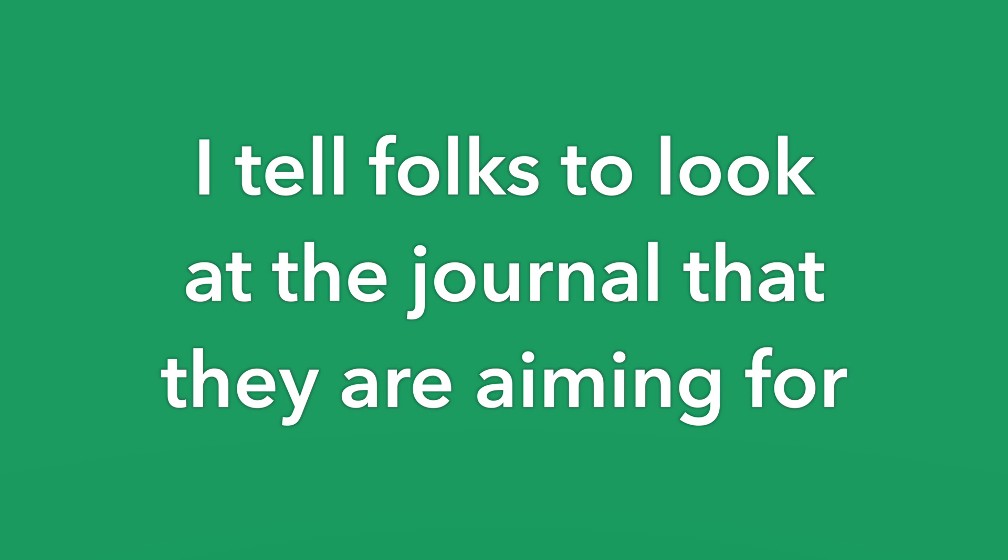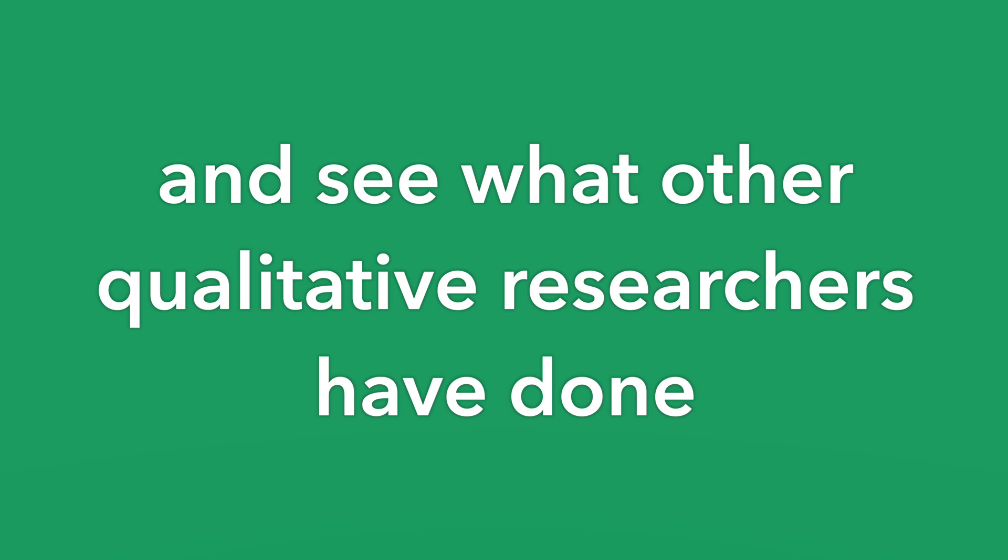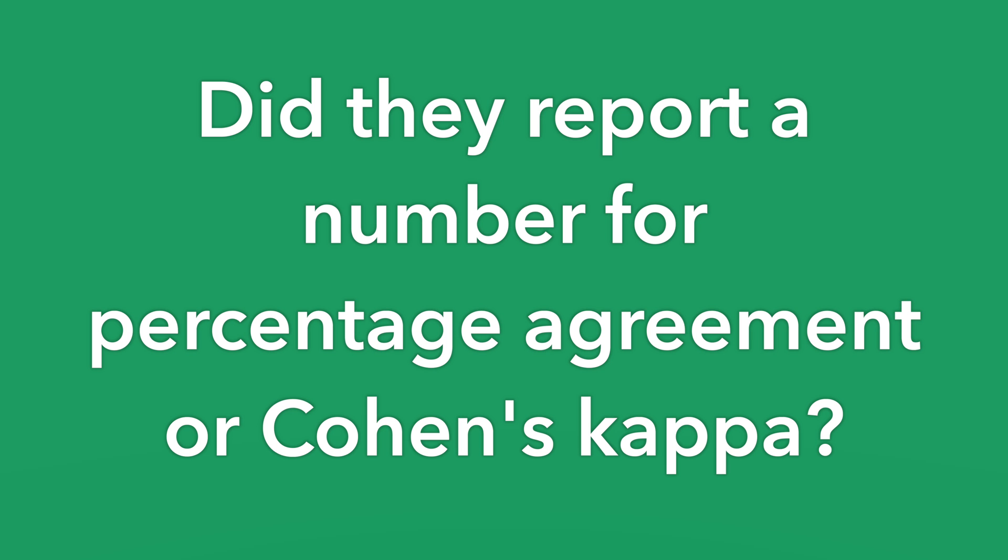I often get asked how to report on inter-rater reliability and whether you have to report a number. Assuming you're an academic researcher aiming for a peer-reviewed journal, I always tell folks to look at the journal they're targeting and see what other qualitative researchers have done — whether they've reported percent agreement, kappa coefficient, or nothing. Regardless, I always recommend reporting on your process as well, which requires keeping good track of your decisions throughout.